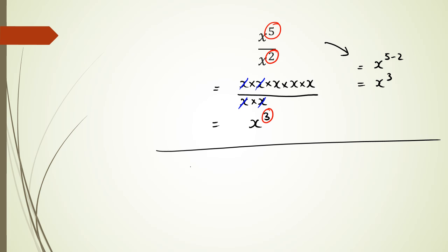So really quick example: if I have y to the power of 7 divided by y cubed, then this would equal y to the power of 7 minus 3, which in turn equals y to the power of 4.